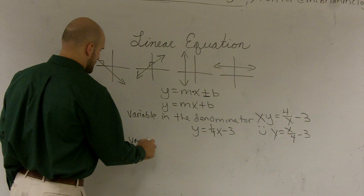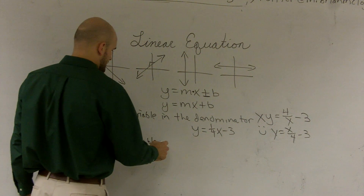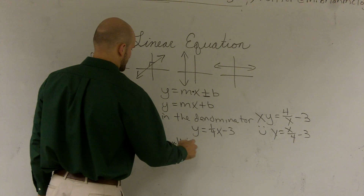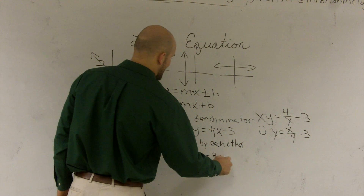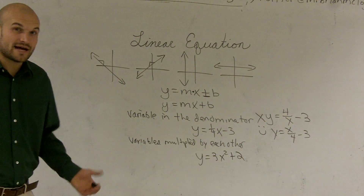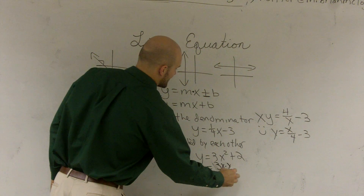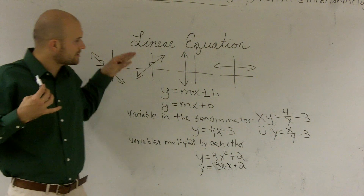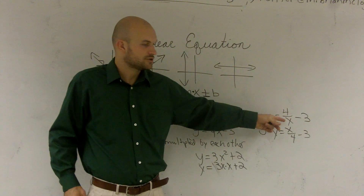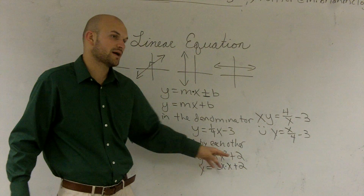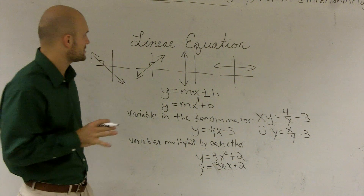You also cannot have variables multiplied by each other — remember, the denominator means division, so you can't be divided by x. You can't have variables multiplied by each other. For example, y = 3x squared plus 2 is not a linear equation, because that's 3 times x times x plus 2. The only operations in linear equations are multiplication, addition, and subtraction. No variable in the denominator, and no exponent greater than 1 — the highest exponent on a linear equation is 1.